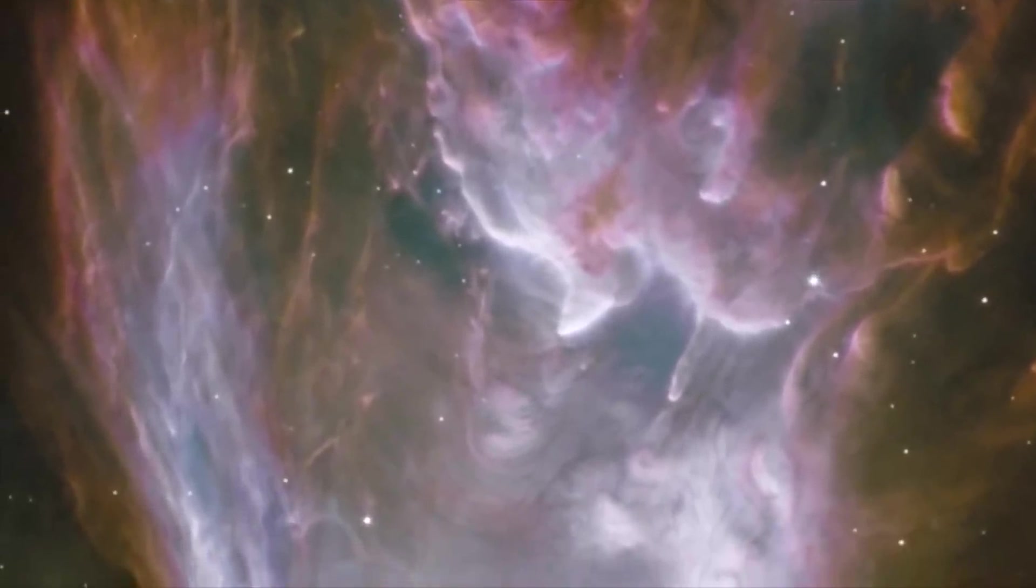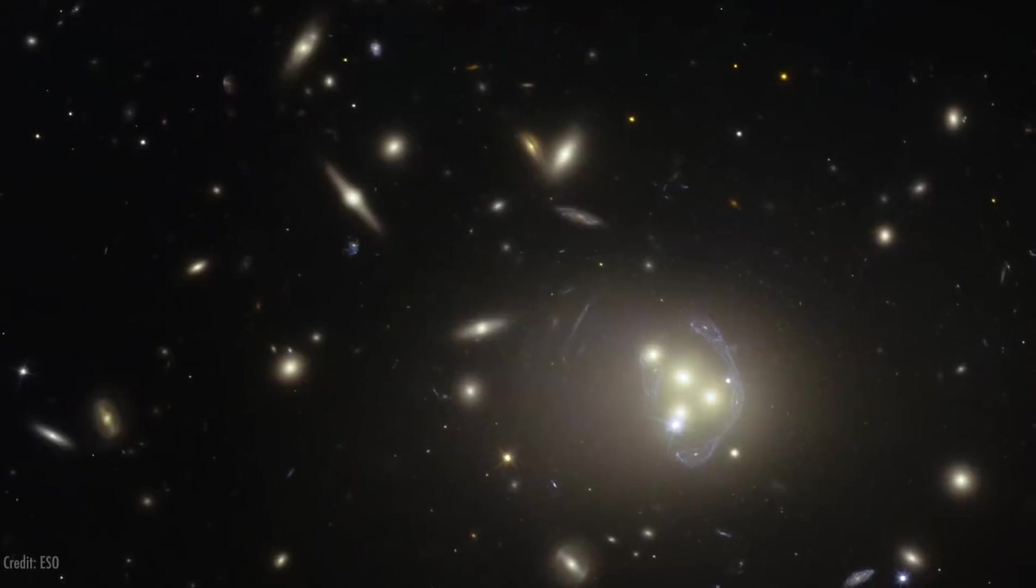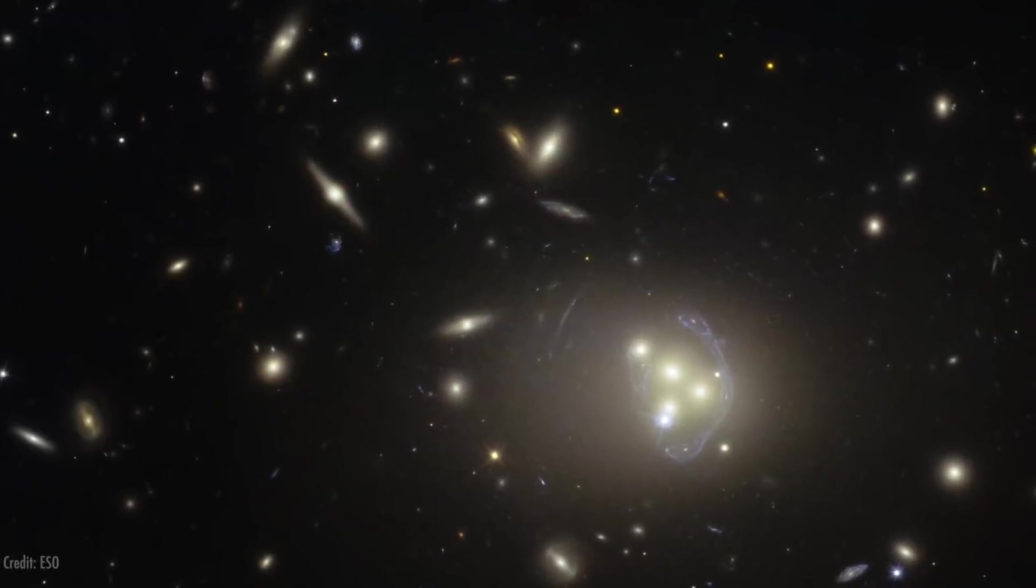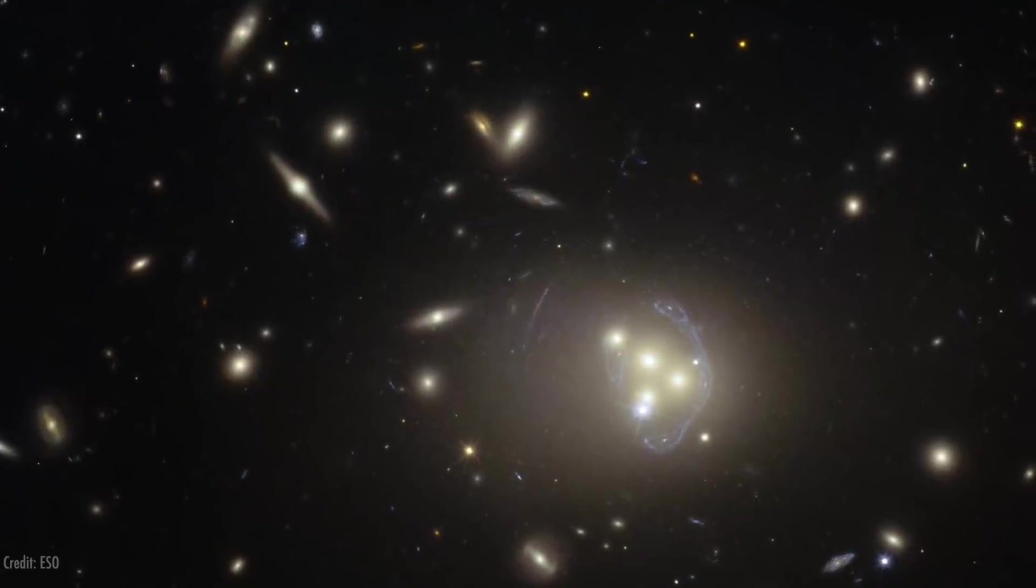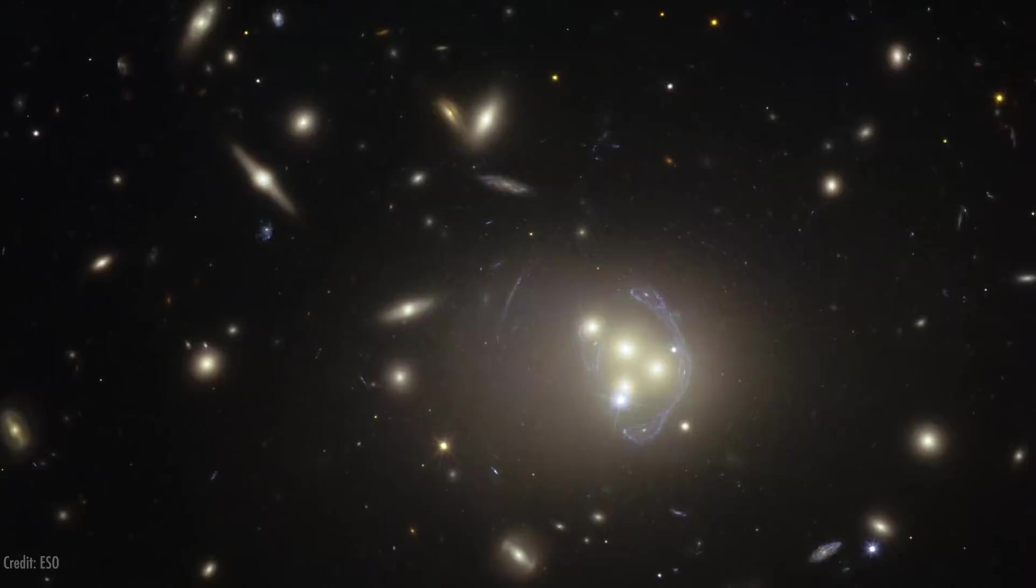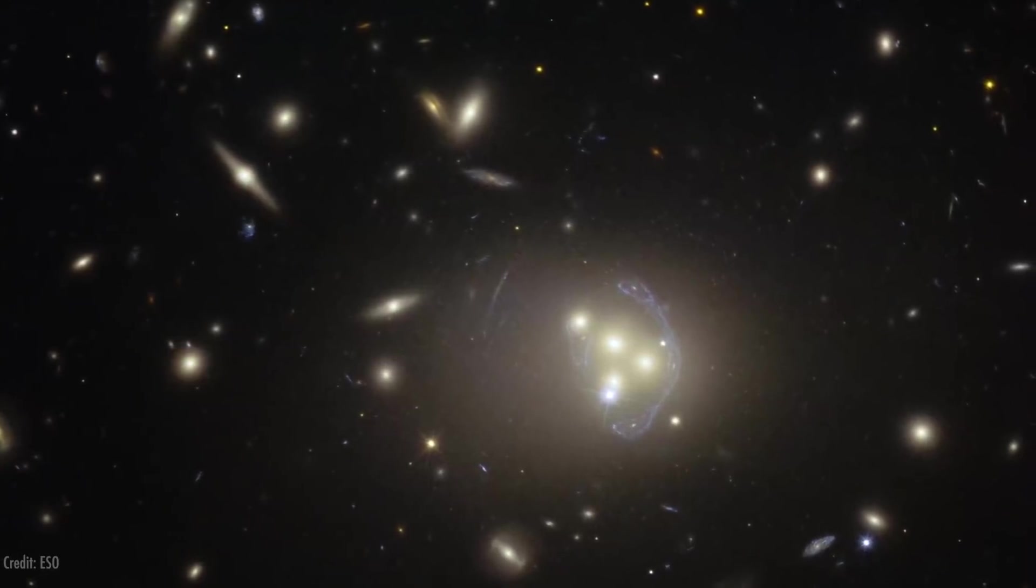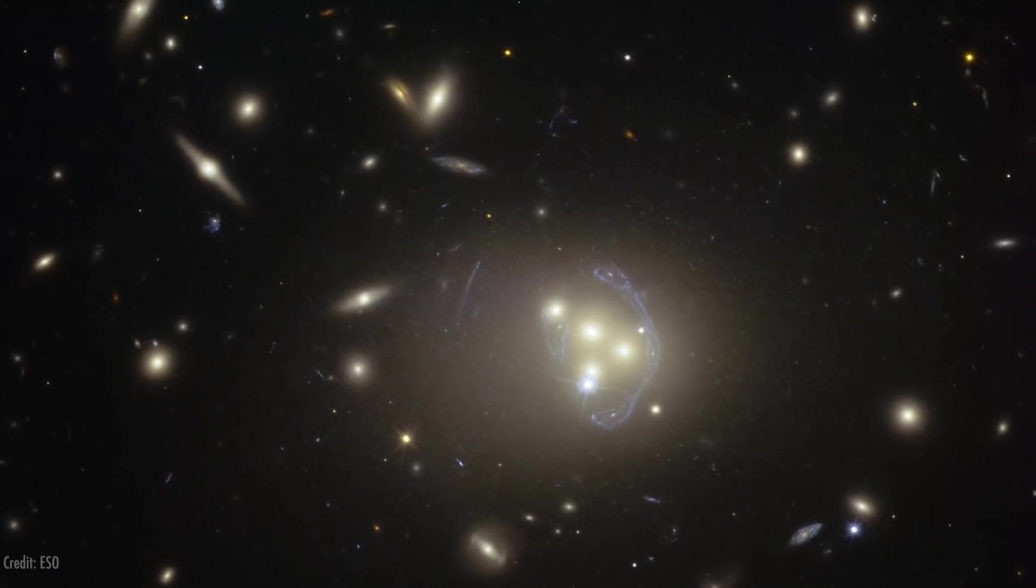And then a couple years later, Edwin Hubble found that galaxies are receding away from each other. And it turns out we do live in an expanding universe. And Einstein admitted that it was his greatest blunder because he had a chance. He had a chance to predict the expansion of the universe before we observed it. But he didn't. And now his name is nothing more than a historical footnote.